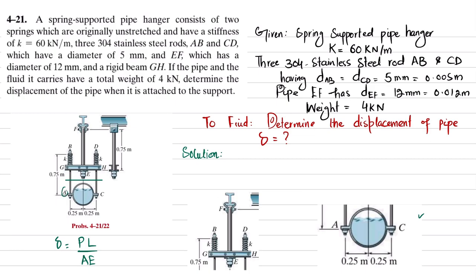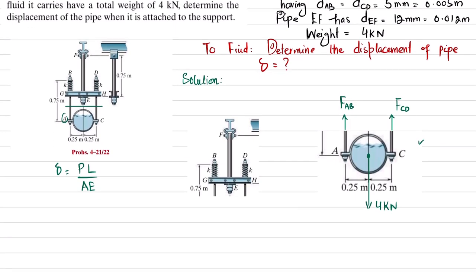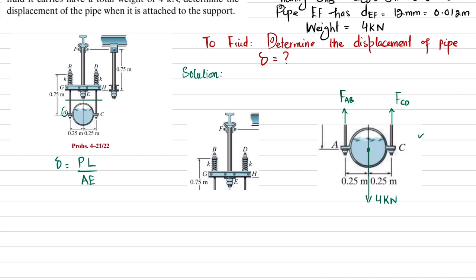The force in rod AB will be upward, so it is F_AB. Similarly, the force in rod CD is F_CD and it will also be upward. The pipe which carries the fluid applies a load of 4 kilo-newton downward. We will find the forces in rods AB and CD by using equilibrium conditions.